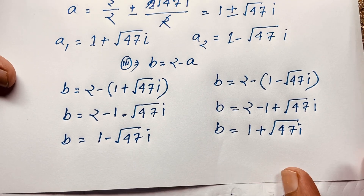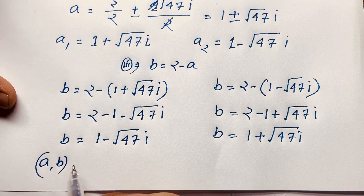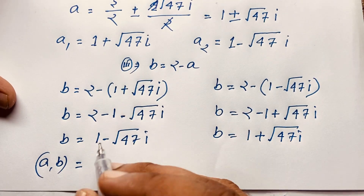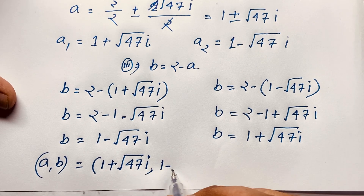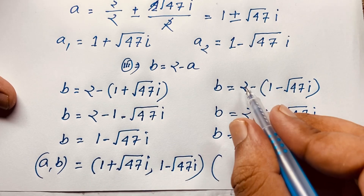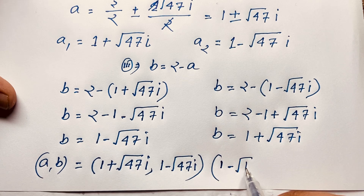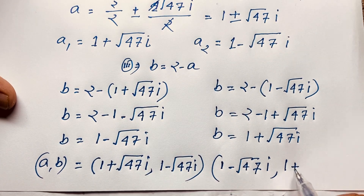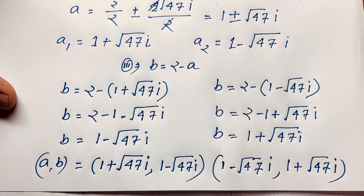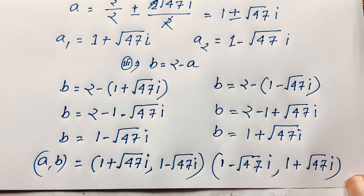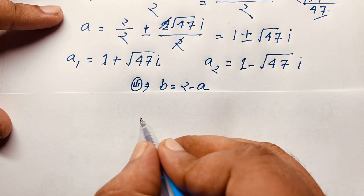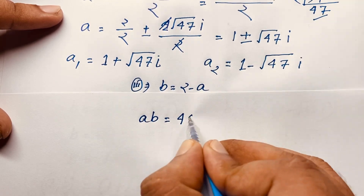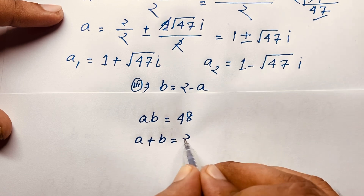So our final solution is: when a equals 1 plus square root 47 i, v equals 1 minus square root 47 i; and when a equals 1 minus square root 47 i, v equals 1 plus square root 47 i. This is our final solution for this math Olympiad question. Now let's verify: av should equal 48 and a plus v should equal 2.